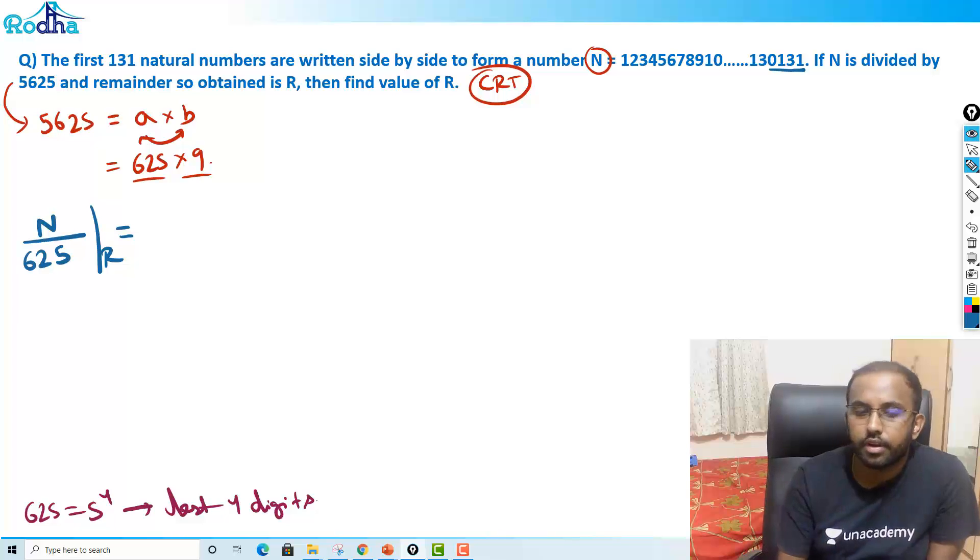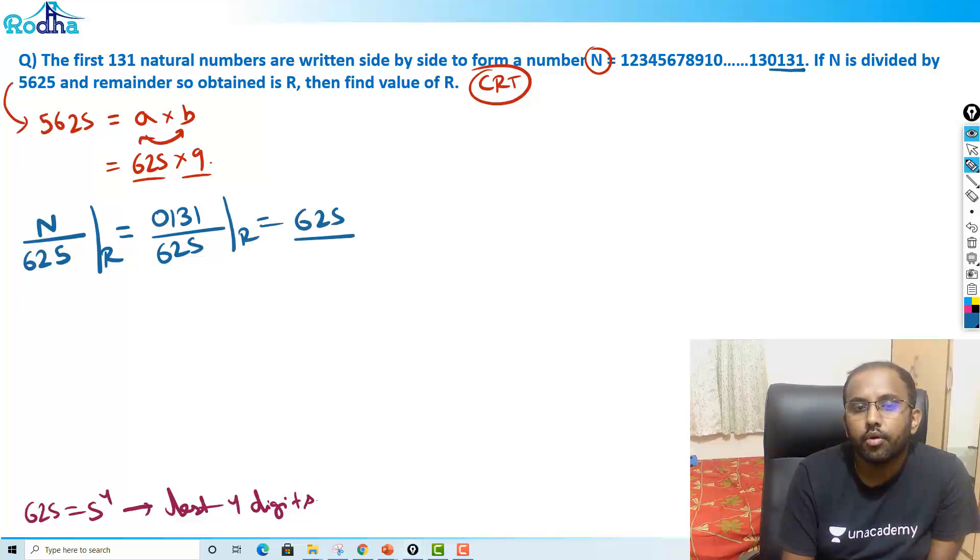So last 4 digits of the number is 0131. So 0131 upon 625, remainder remains 131. That means N divided by 625, remainder is 131. N/625 remainder is 131.